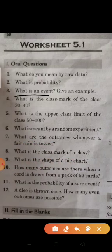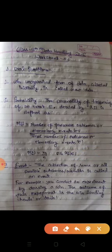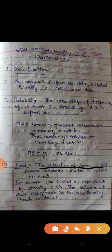Question three, what is an event? Give an example. Event is the collection of some or all possible outcomes or results, is called an event.